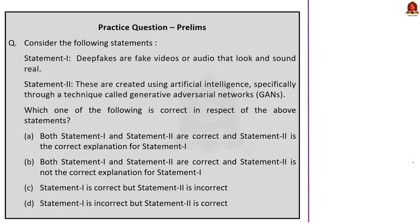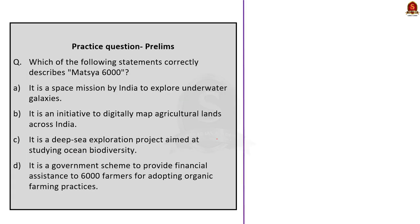In this question: first statement — deep fakes are fake videos or audios that look and sound real — this statement is correct. Second statement — these are created using artificial intelligence, specifically through a technique called generative adversarial networks — this statement is also correct, and it explains statement one. So the answer is option A: both one and two are correct, and statement two is the correct explanation of statement one.